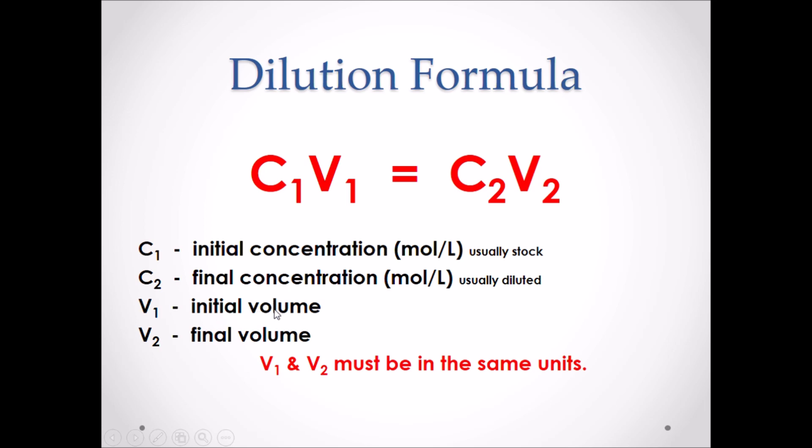V1 is your initial volume. It usually refers to the amount of stock you need. And V2 is the final volume. This is typically the final volume of the solution that you want to make. Please note that V1 and V2 must be in the same units. They can be in milliliters or they can be in liters, as long as they are the same unit.